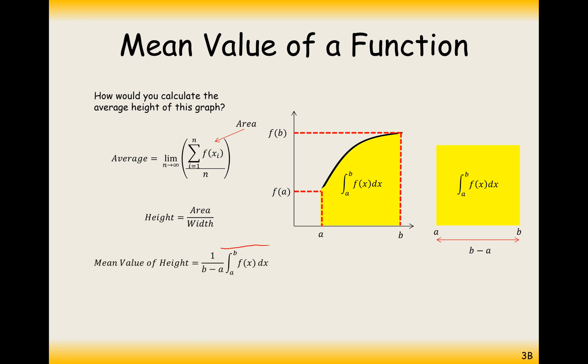So this is the formula that you need to remember to do mean values of a function questions. It's one divided by b minus a because that's the width of the interval. And we're dividing the area by that interval. So it's going to be area divided by width to give you height. And that's effectively the mean value of the height.